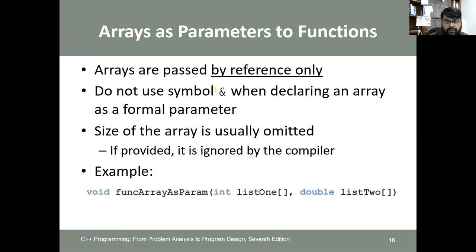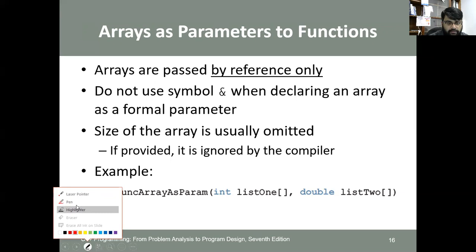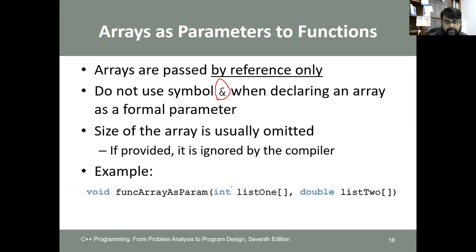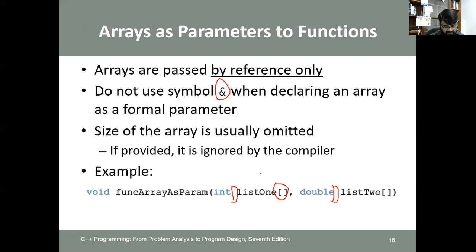The reason arrays are passed by reference is that passing by value would require making a duplicate copy, and the next memory address would not be accessible. When passed by reference, the memory address of the starting element is passed, and subsequent elements are accessible by incrementing the index. The ampersand sign is not used because the brackets serve that purpose, confirming pass-by-reference.